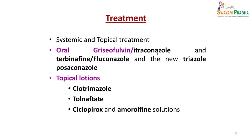Treatment comprises systemic or topical therapy. Oral griseofulvin or itraconazole is given, or terbinafine, fluconazole, voriconazole, or posaconazole. Topical lotions such as clotrimazole and tolnaftate can be used if the disease is mild. Many times a combination of systemic and topical treatment is needed depending on severity, and treatment can extend to 6–8 months depending on the extent of the lesion.